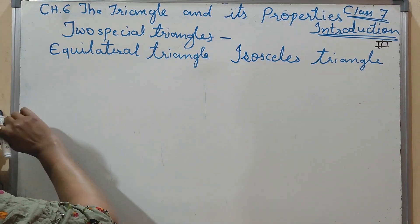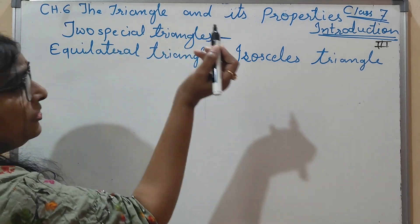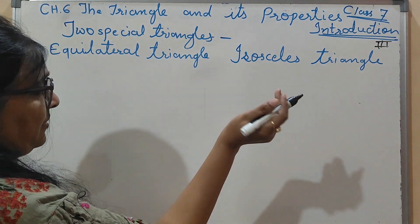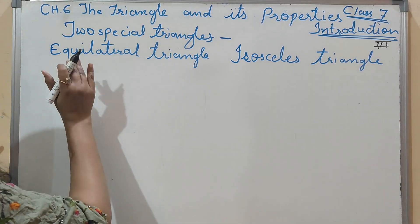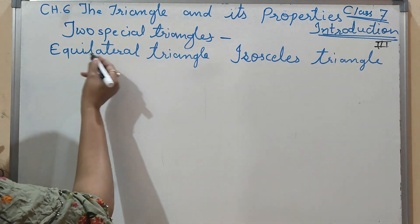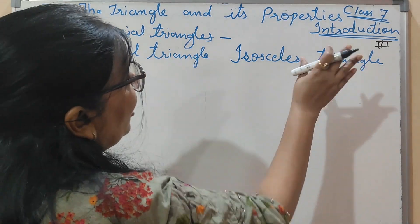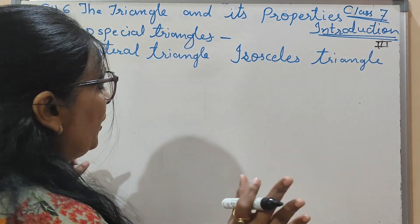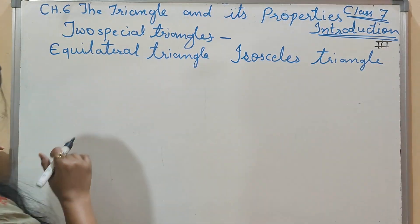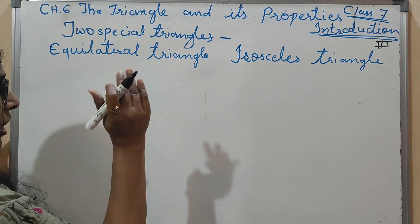Now here we will start two special triangles. These two special triangles kaun se hain? Equilateral triangle and isosceles triangle. So sabse pehle hum dekhte hain equilateral triangle.